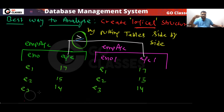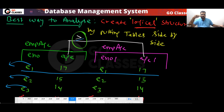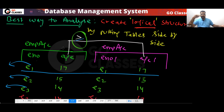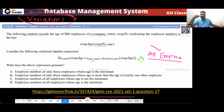For example, E3 (age 14) will also come with E1 (age 17), and because of the trivial match, E3 will go to the output. Every employee will go to the output, so if you use ≥, the answer becomes: all employee numbers.